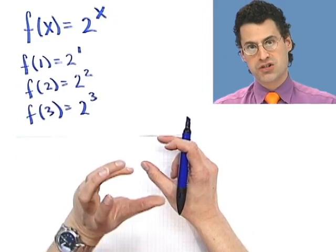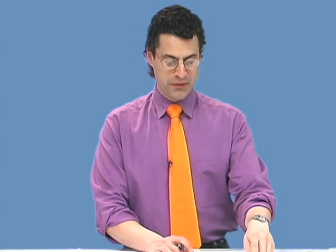Now, when I have functions that I just want to restrict the values I plug in to be the counting numbers, we actually call such things sequences. And we denote them in sort of a funny way. And let me show you the funny way that we denote them.